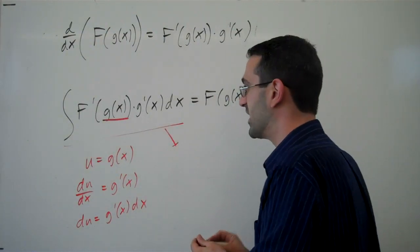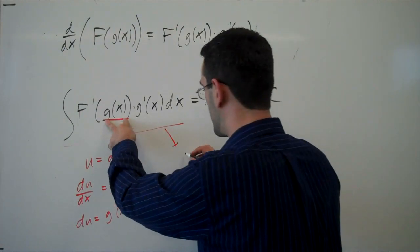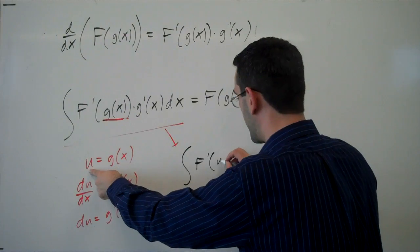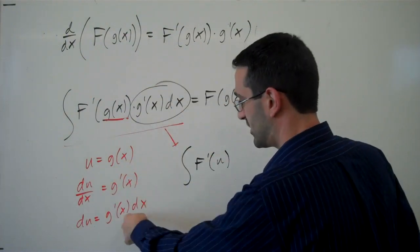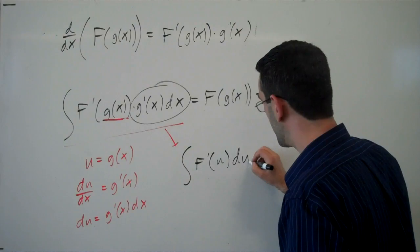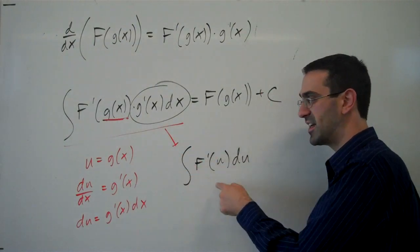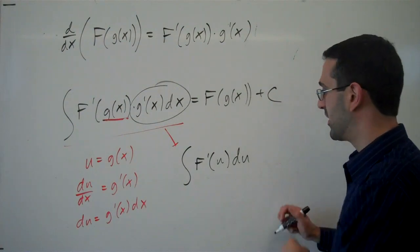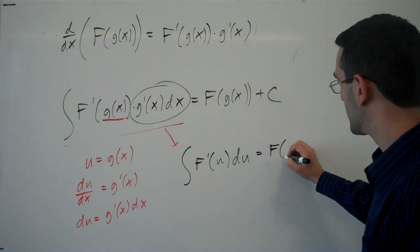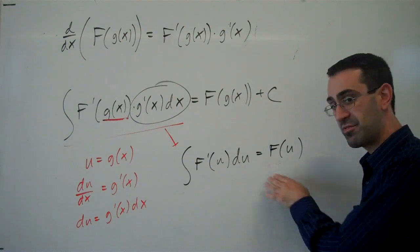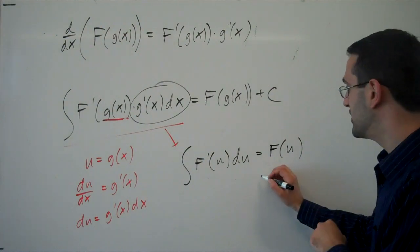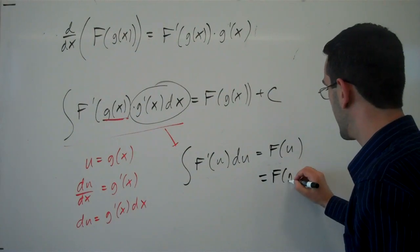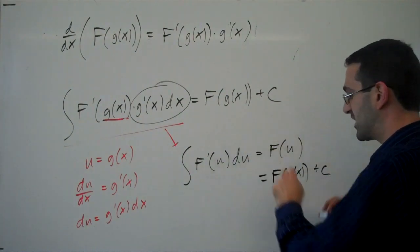What this allows us to do is take our original integral here and make some replacements. We can replace the inside function here with u, and all of this corresponds with du. This takes a very complicated integral and makes it into a much simpler one where then we can integrate this function getting F of u, and then undo the substitution, replace the u back with g of x, and get the integral that we were expecting.